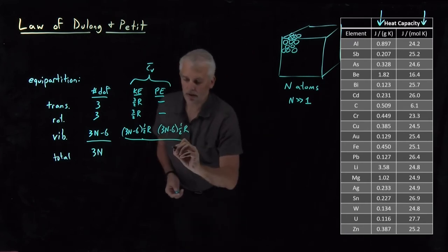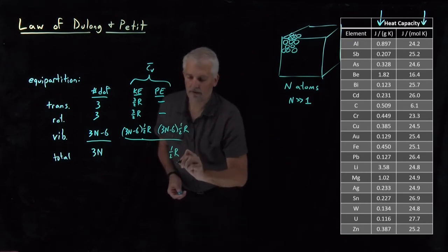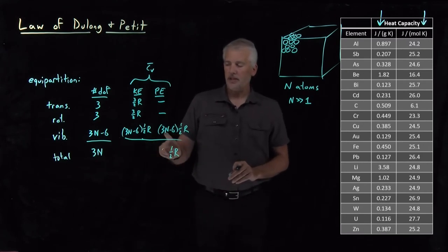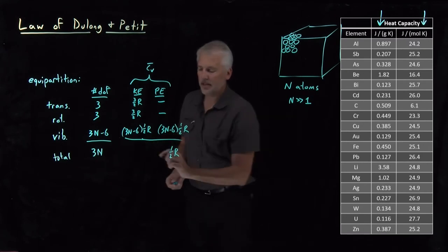So if I add all these up, I've got a whole bunch of factors of one half R. I've got 3N minus 6 and 3N minus 6. That adds up to 6N minus 12.